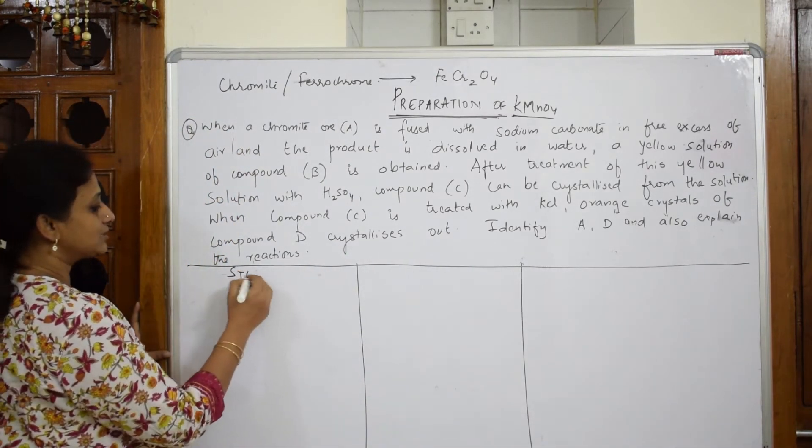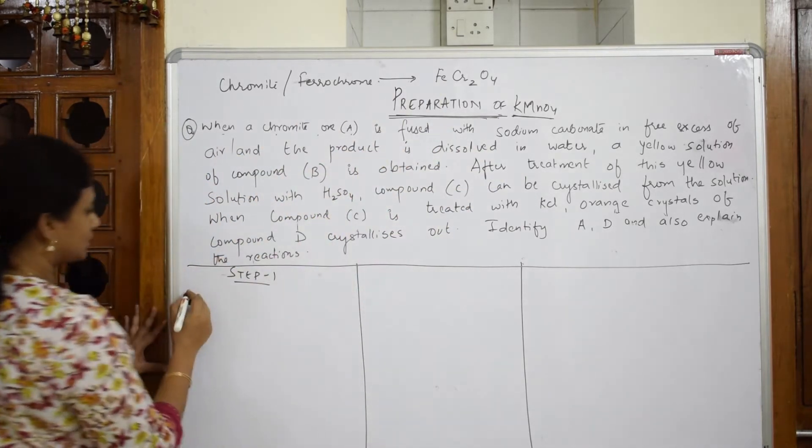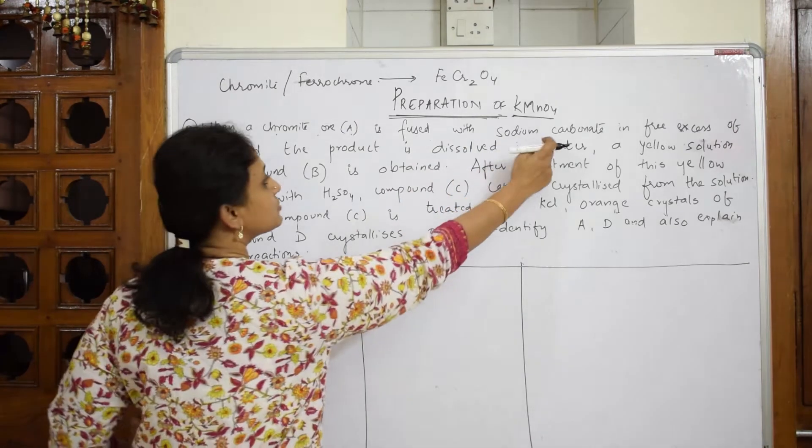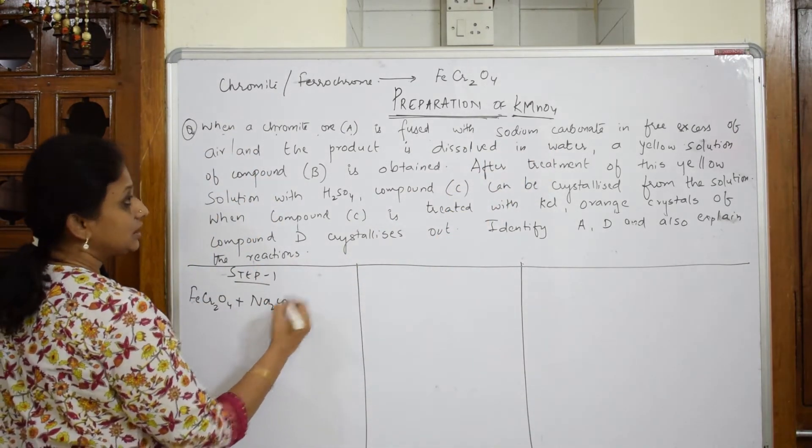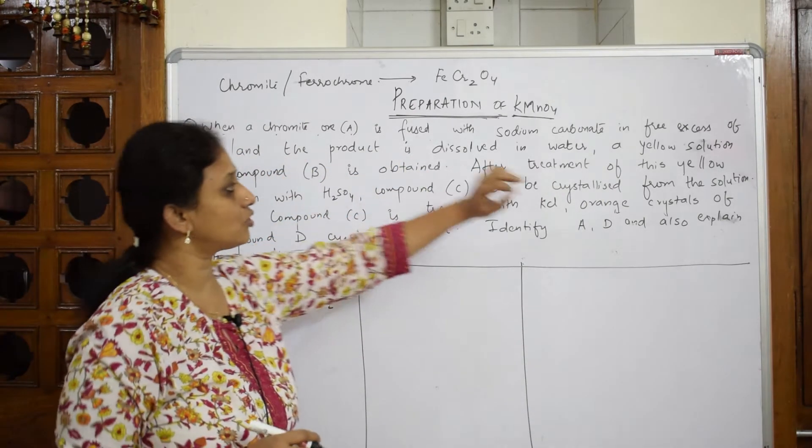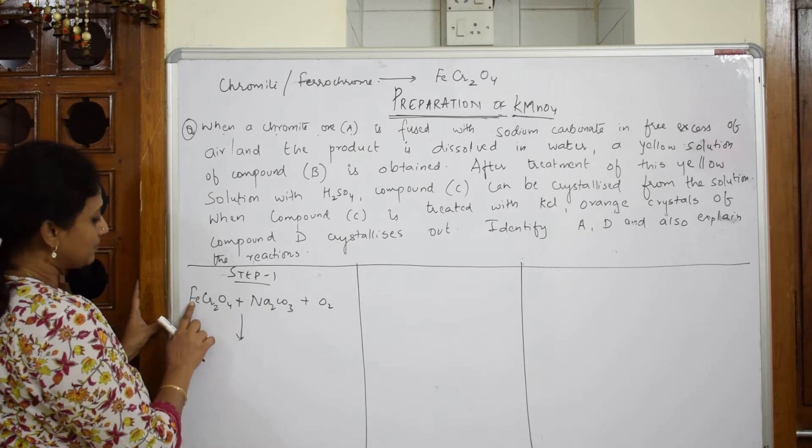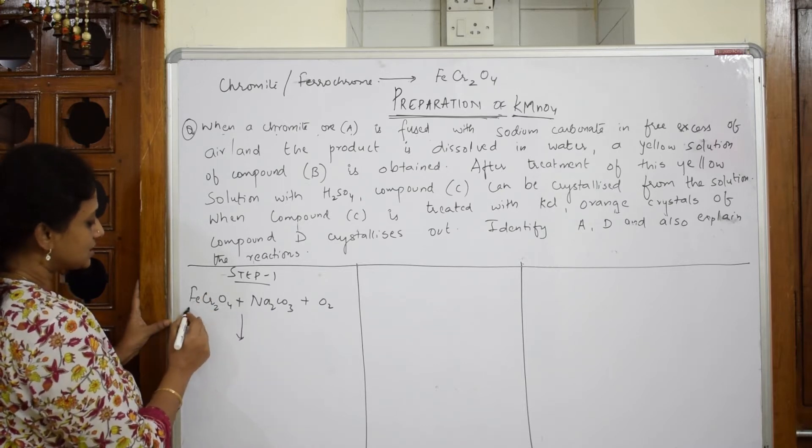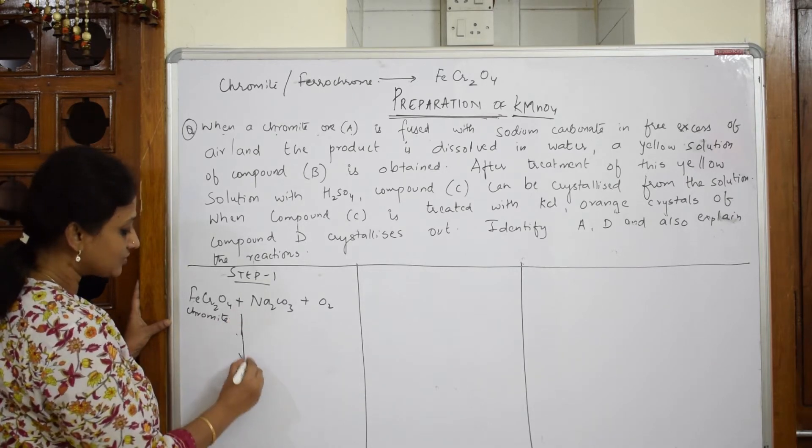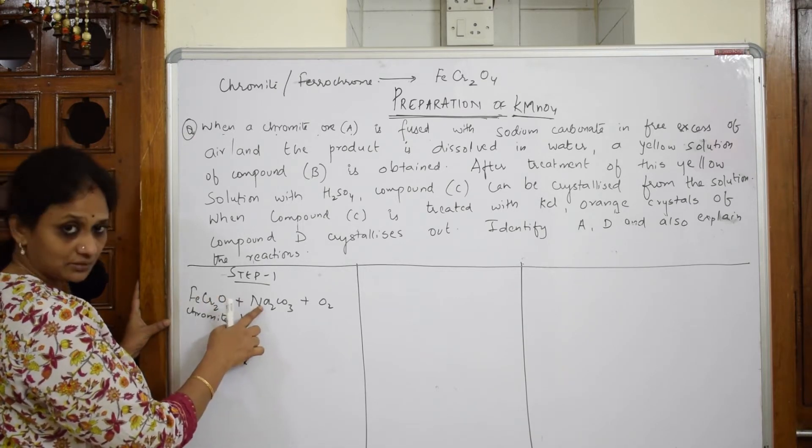In step one, let us read what is given to us. When a chromite ore is fused with sodium carbonate. So, this is what I require. I require FeCr2O4. What is it fused with? Fused with sodium carbonate Na2CO3 in free excess of air, in excess of oxygen. And the product is dissolved in water. They want us to write the product first. When I have to write the product, just see this sodium is going to replace this iron.